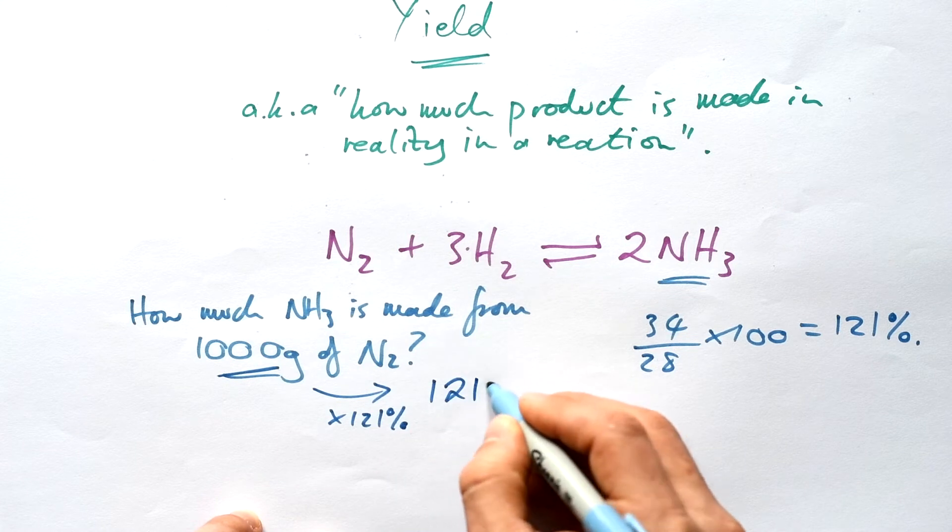Let's take the formula mass of nitrogen - that's 14 times 2, so 28. Two NH3 molecules give us 34. That's 34 divided by 28 times 100. You might see we'll get a number greater than 100%, but that's okay - it's 121%. Applying that 121% to our 1000 grams gives us 1210 grams of ammonia that could be made.